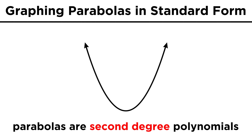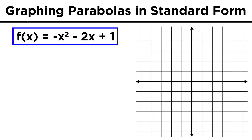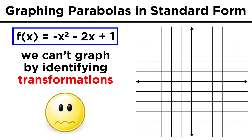We already know that parabolas are second degree polynomials, but we only looked at very simple examples, like x squared and others in vertex form that involve only known transformations of x squared. What if we have something trickier, like negative x squared minus two x plus one? With this standard form, we can't readily identify shifts or stretches that can be applied to a simpler function.